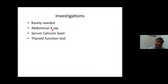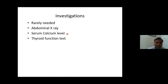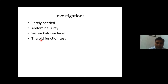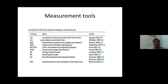Investigations are rarely needed, but if history suggests obstruction, an abdominal X-ray should be obtained to look for multiple air-fluid levels. Corrected serum calcium should be checked — especially in patients with hyperparathyroidism — and thyroid function tests should be obtained if hypothyroidism is suspected.